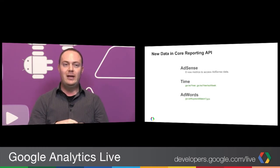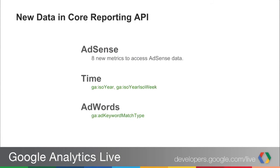Recently we also released some new data in the Core Reporting API. One of our top feature requests on our issue tracker was AdSense data, so we've added a whole bunch of new AdSense metrics. You can visit the Dimensions and Metrics Explorer to see what those metrics are. We also added a few more time dimensions: ga:isoYear and ga:isoYearIsoWeek. These work with the ISO week dimensions and should be used together — not with Gregorian calendar entries like ga:week. Finally, we added the AdWords keyword match type dimension, which shows which match types were applied to a specific keyword. All of these are available through the Dimensions and Metrics Explorer and the Query Explorer.